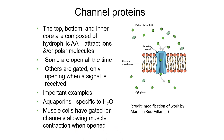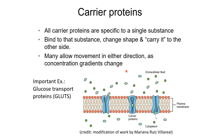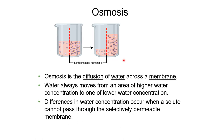Carrier proteins are specific to a single substance - like a lock and key. They must bind to that substance, change shape, and then carry it to the other side. An example is glucose transport proteins, commonly abbreviated as GLUTs. These can allow movement in either direction as concentration gradients change, so this mechanism can be either facilitated diffusion or active transport.